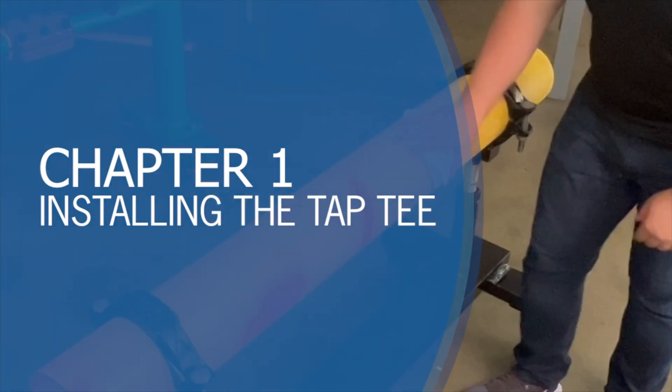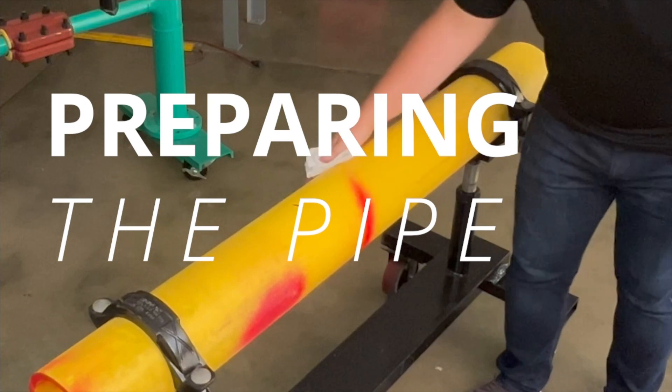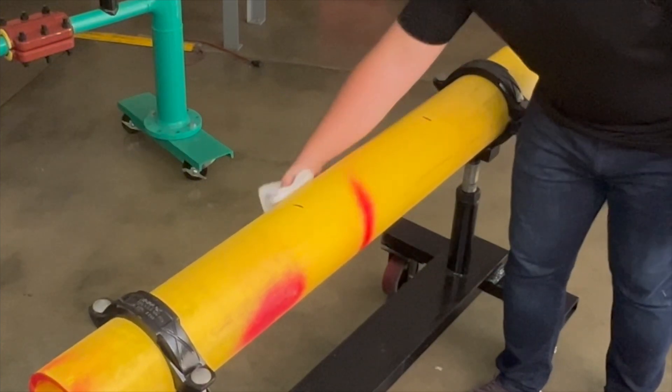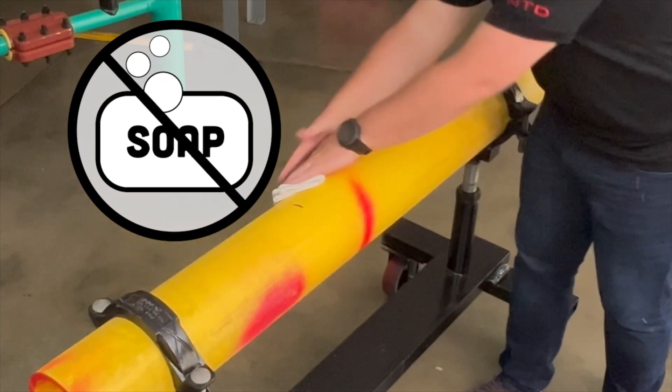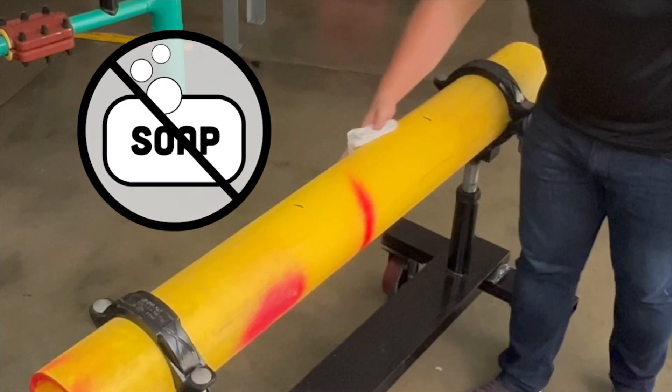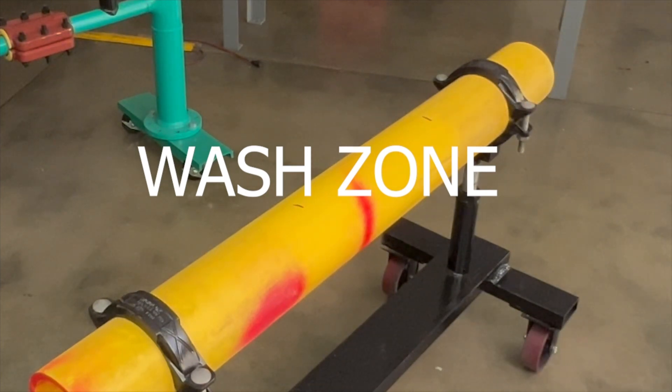Chapter 1: Installing the tap tee on the main. Part 1: Preparing the pipe. The first step in preparing the pipe for fusion is to remove loose mud, dirt, and debris with water and a cloth. Do not use soaps or detergents to wash the pipe. The water wash zone should be three times the width of the fitting saddle.